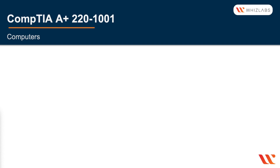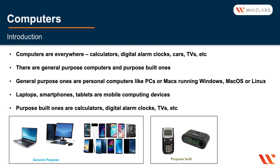In this lecture we look at basic computer hardware. A computer is essentially something that computes — it can execute commands and perform calculations. Computers are found in a lot of different gadgets and consumer electronics we see on a day-to-day basis: calculators, digital alarm clocks, cars, TVs — all of these are computers or have computers in them.